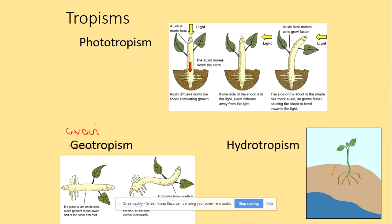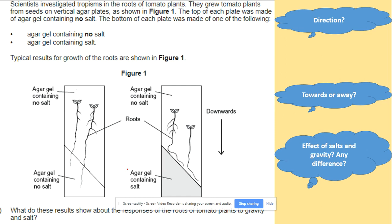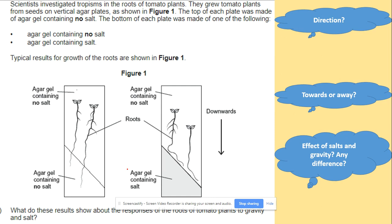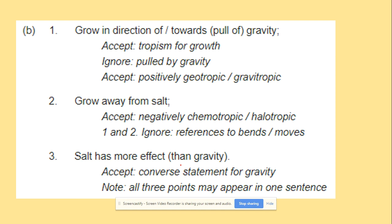To summarize, the correct term is gravitropism — not geotropism — for AQA marks. Looking at the past paper question: what do the results show about the response of the roots? Without salt, roots grow towards gravity — positive gravitropism. With salt present, the roots grow away from the salt. The response in the presence of salt is more effective because salt has a greater effect on the direction of root growth.